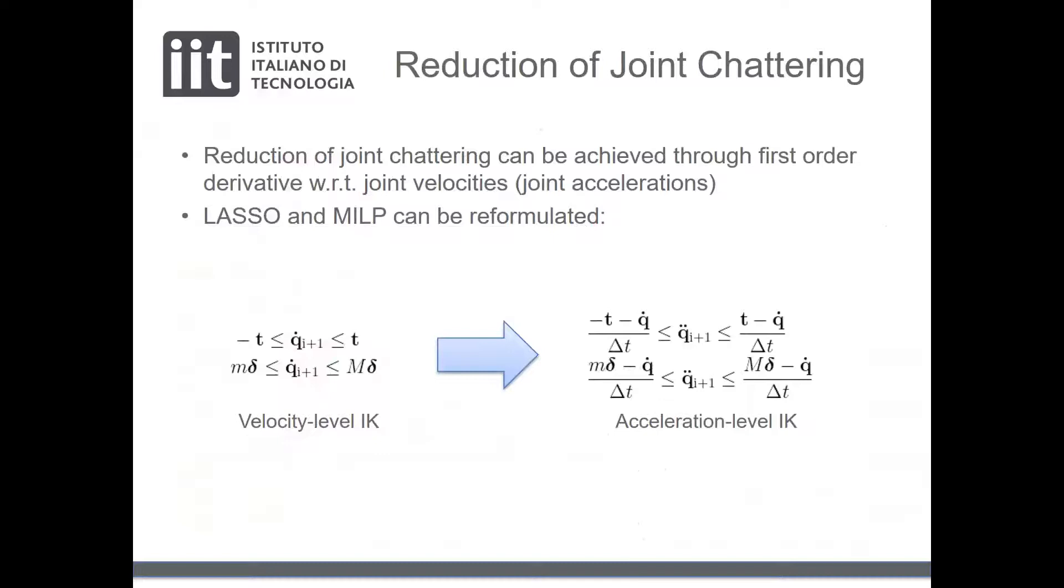Chattering of joint velocities can be reduced considering high-order derivatives of joint velocities, for example joint acceleration. In this case, we can consider a first-order dynamic between velocity and acceleration and reformulate the LASSO and big-M constraints as shown.